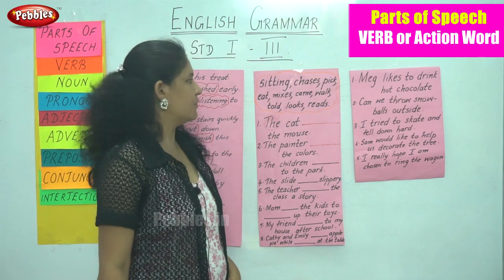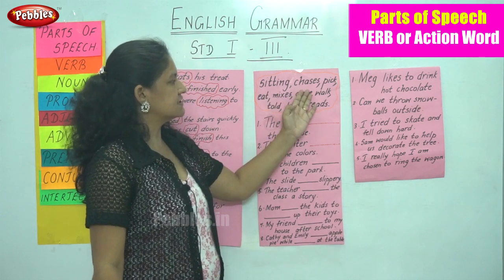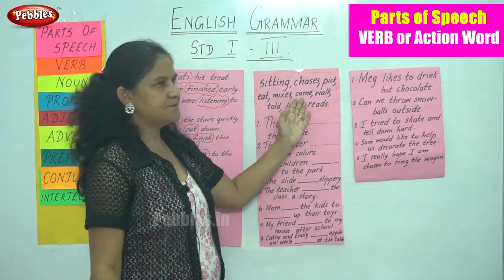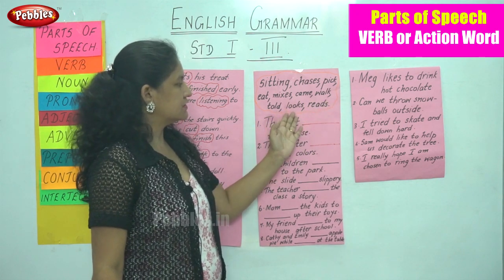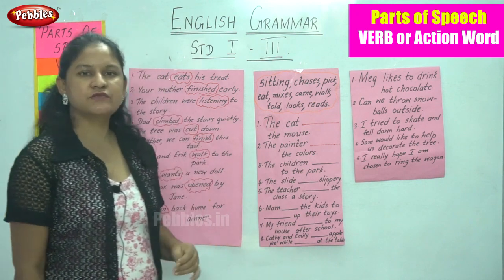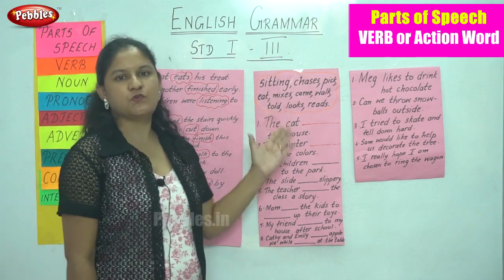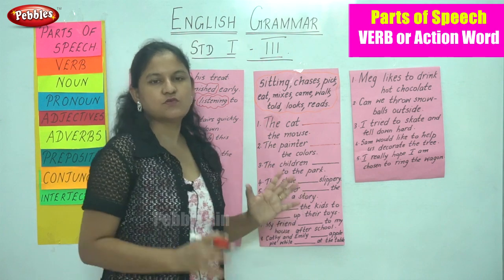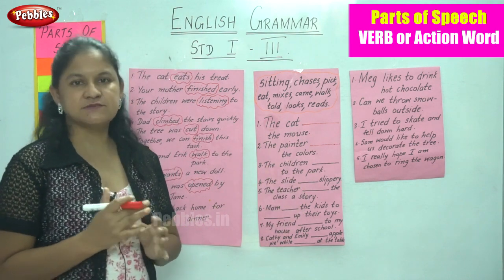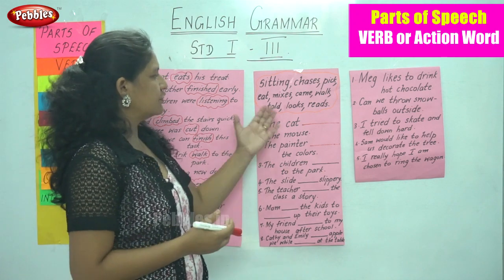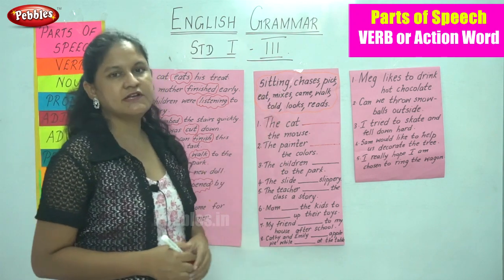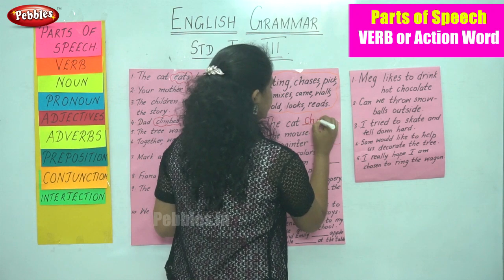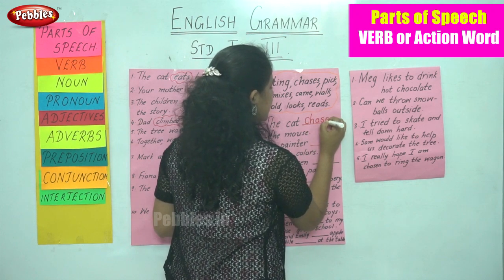We are going to read the sentences and place the verbs in the appropriate place. The first sentence: 'The cat ___ the mouse.' What does a cat normally do? It runs behind a mouse, and we find the word chases. So: 'The cat chases the mouse.' Chases is the verb or action done by the cat.